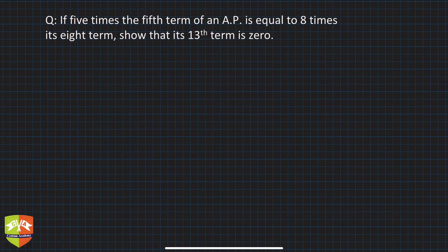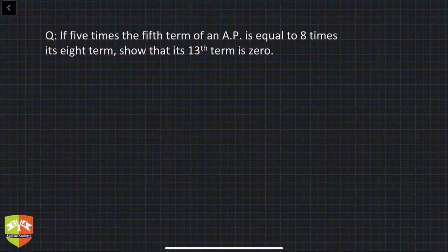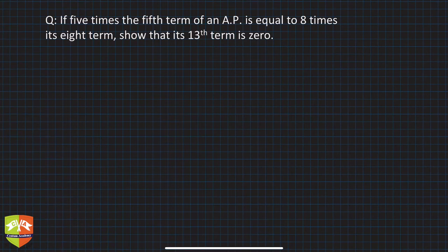Hello and welcome to another session on problem solving on sequence and series. We are discussing general term of a sequence. The question says: If five times the fifth term of an AP is equal to eight times its eighth term, show that its thirteenth term is zero.